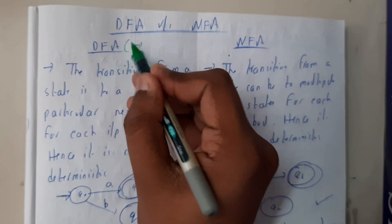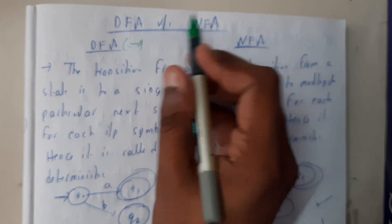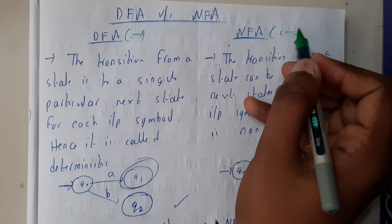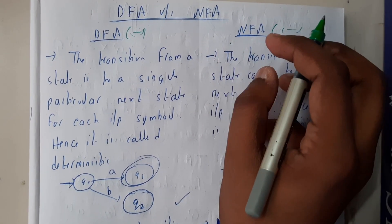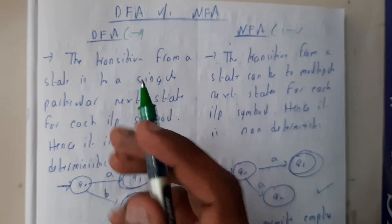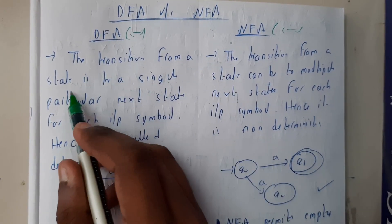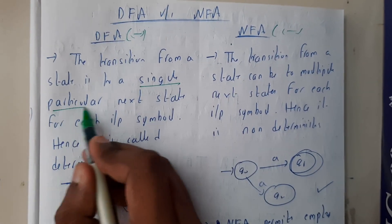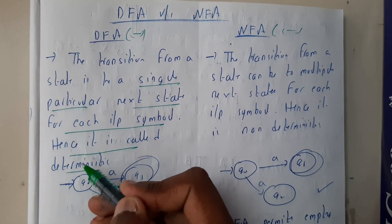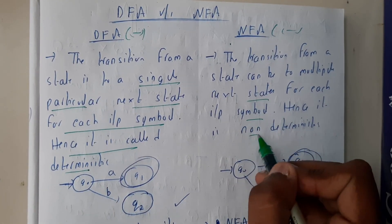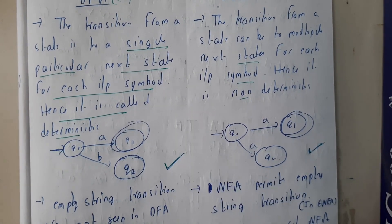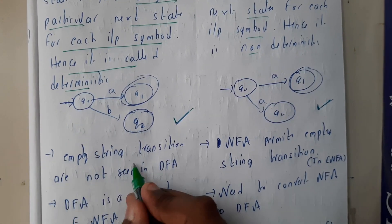Write the full form as the first difference — that's the simple way. So: Deterministic Finite Automata versus Non-Deterministic Finite Automata. Now write the definition for deterministic and non-deterministic. The transition from a single particular state to the next state for each input is called deterministic. Where we'll be having two different states for a single input, that is non-deterministic.